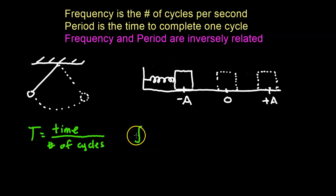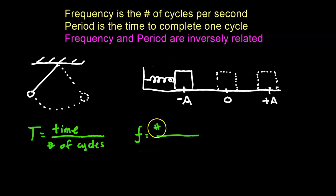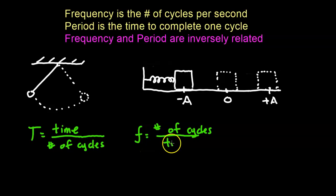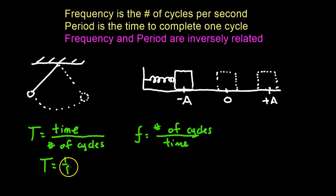We can also calculate the frequency, which is the number of cycles per second. You measure the number of cycles divided by the time to complete those cycles. You'll notice that period and frequency are inversely related: the period equals one over frequency, and frequency equals one over period.